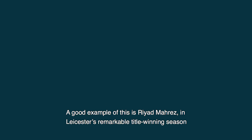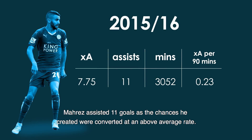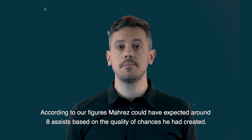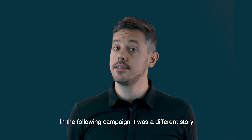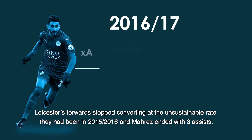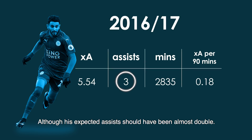A good example of this is Riyad Mahrez. In Leicester's remarkable title-winning season, Mahrez assisted 11 goals as the chances he created were converted at an above-average rate. According to our figures, Mahrez could have expected around eight assists based on the quality of chances he created. In the following campaign it was a different story — Leicester's forwards stopped converting at the unsustainable rate they had been in 2015–16, and Mahrez ended with just three assists, though his expected assists should have been almost double that.